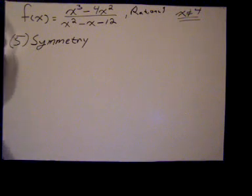Good morning. We're going to continue our function summary of a rational function x cubed minus 4x squared over x squared minus x minus 12.